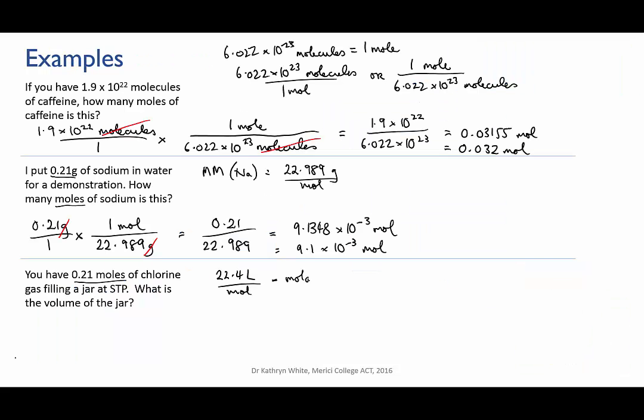What I know from the problem is that I have 0.21 moles of chlorine, and I need to arrange my conversion factor so that the moles cancel out and I'm left with litres because I'm looking for the volume. So the way that I've written the conversion factor here, with the litres on the top and the moles on the bottom, is the correct way around for this problem because it allows the moles to be cancelled out and I'll be left with litres, which gives me 4.704 litres.